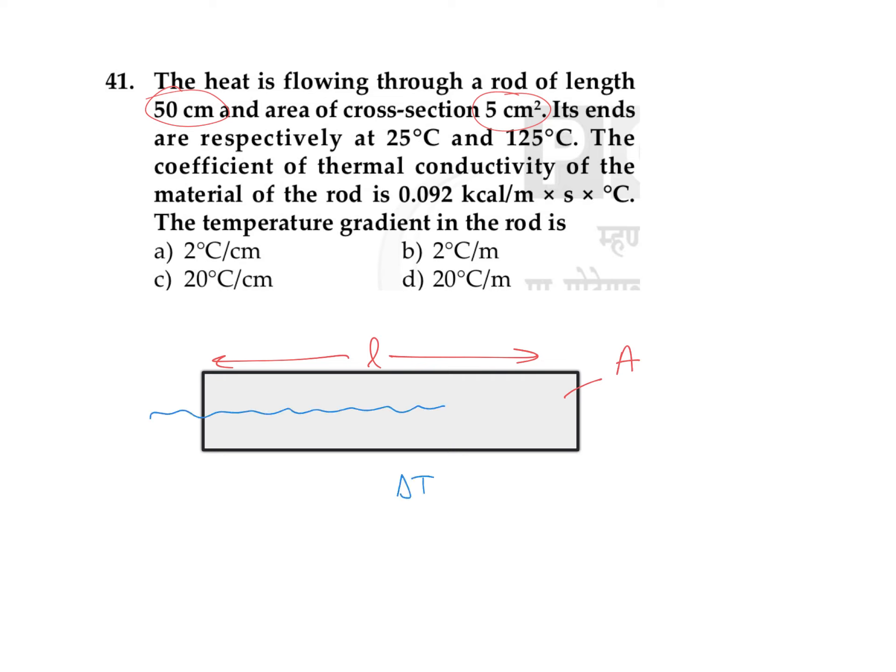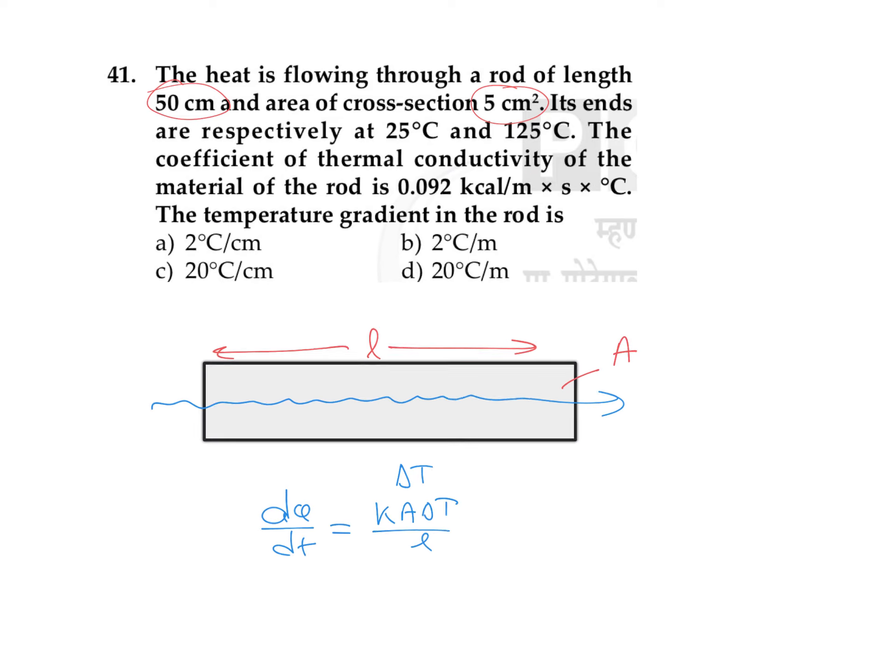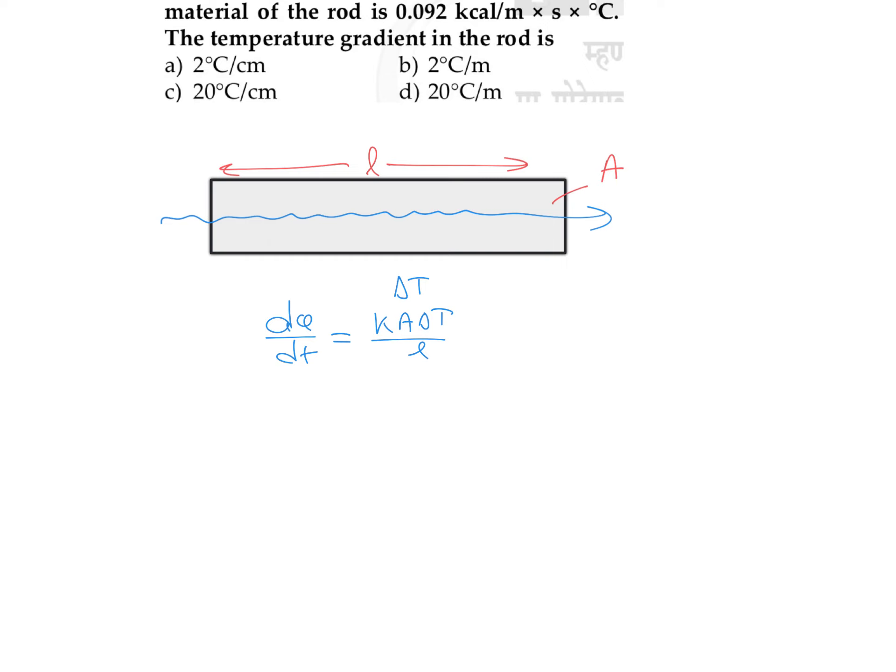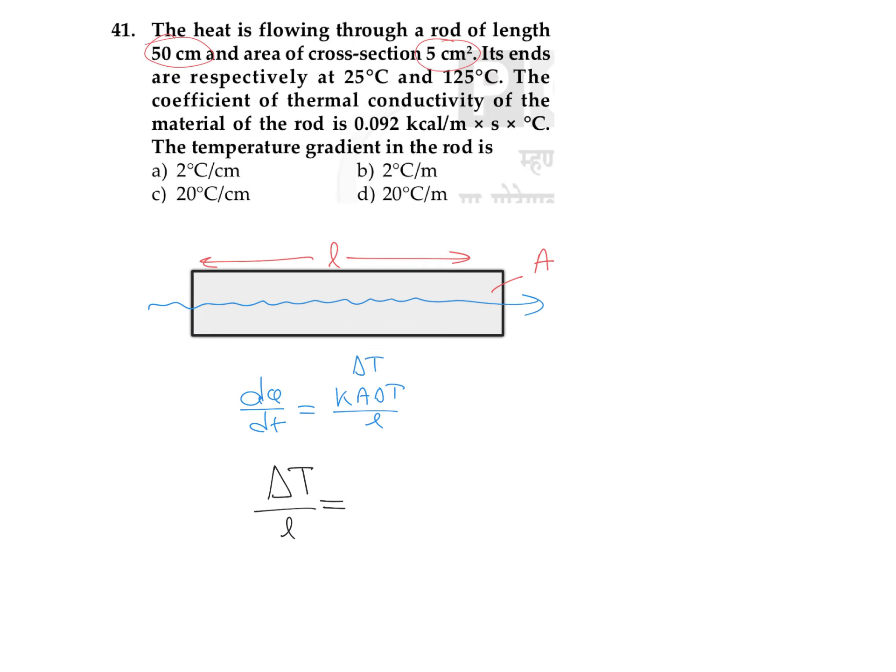The rate of flow of heat energy dQ by dt can be found using this equation: k A delta T divided by l. This term delta T by l represents the temperature gradient, so the value of temperature gradient is delta T divided by l.